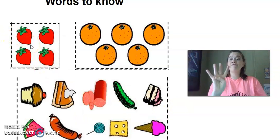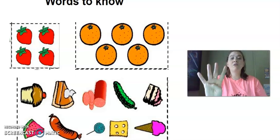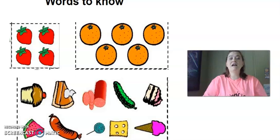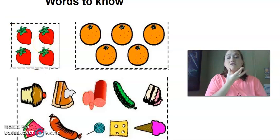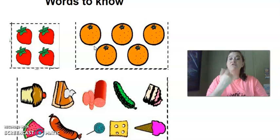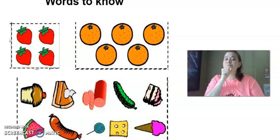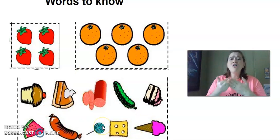And then up here, four strawberries. The number four, and the sign for strawberries is right here. Strawberries. Five oranges. I showed you the sign for the color orange - it's the same sign for the fruit orange. Orange. And down here are all...